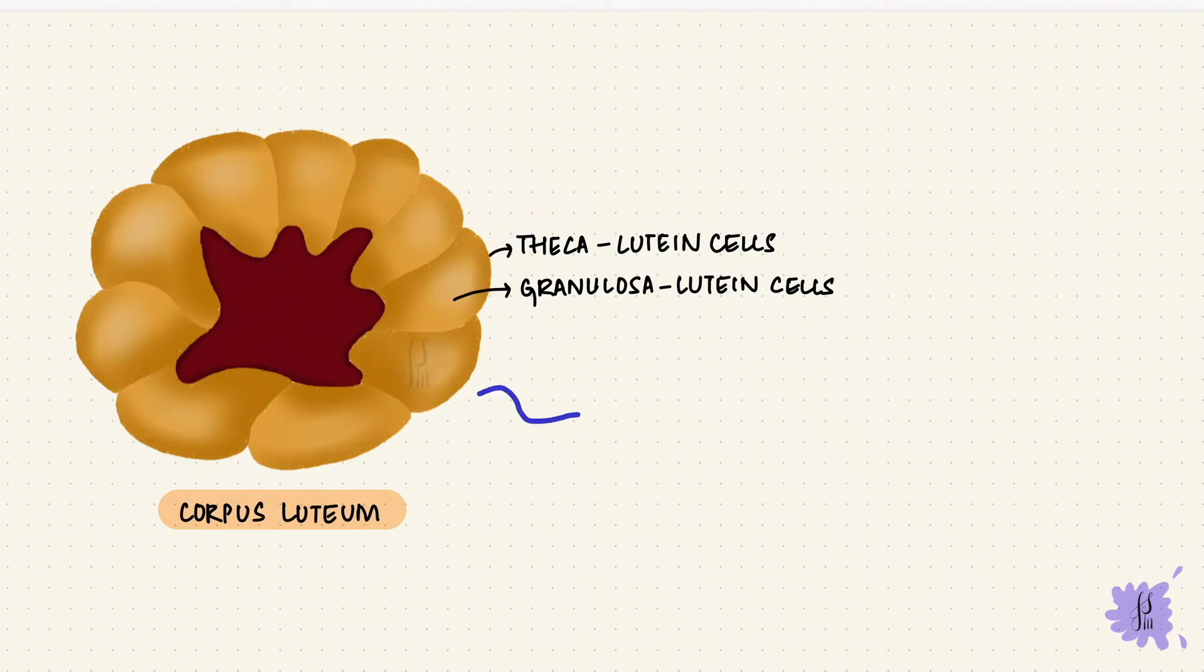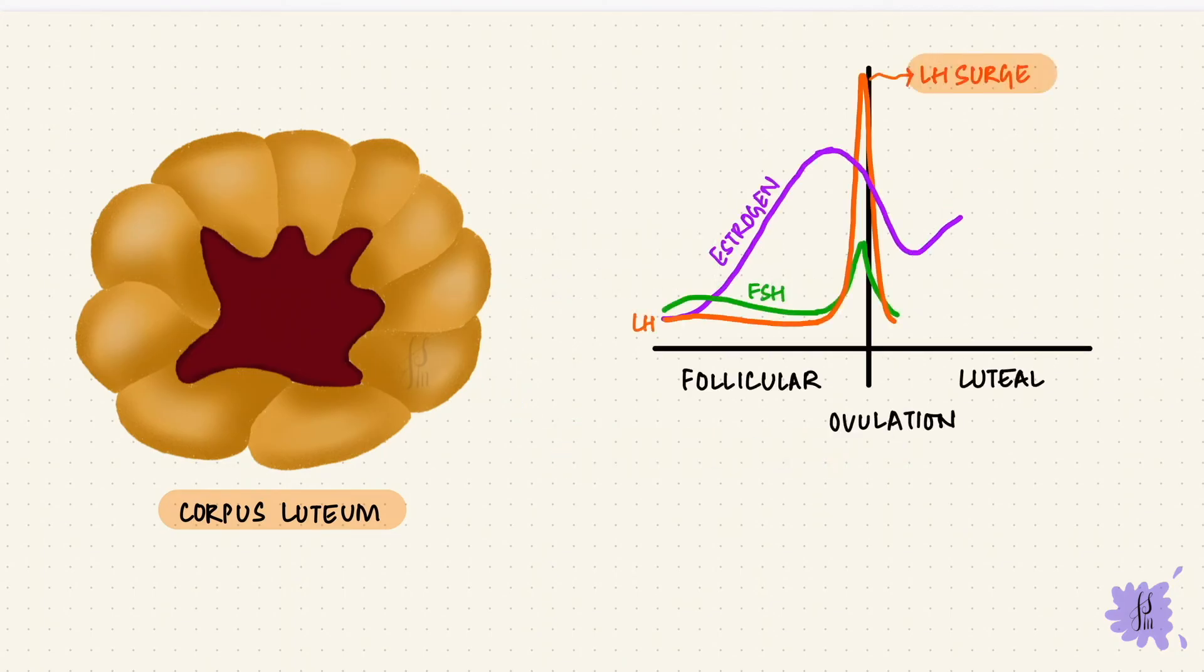The luteal cells have LH receptors, so they can form progesterone from cholesterol. Now not all of the progesterone has to go down that path and form estrogen. So there's a lot more progesterone being formed than is being converted to estrogen. So this part of the cycle has higher progesterone levels. And that negative feedback, it's back again. So that lowers the FSH and the LH levels. The corpus luteum also produces inhibin, which like the name suggests, inhibits FSH.